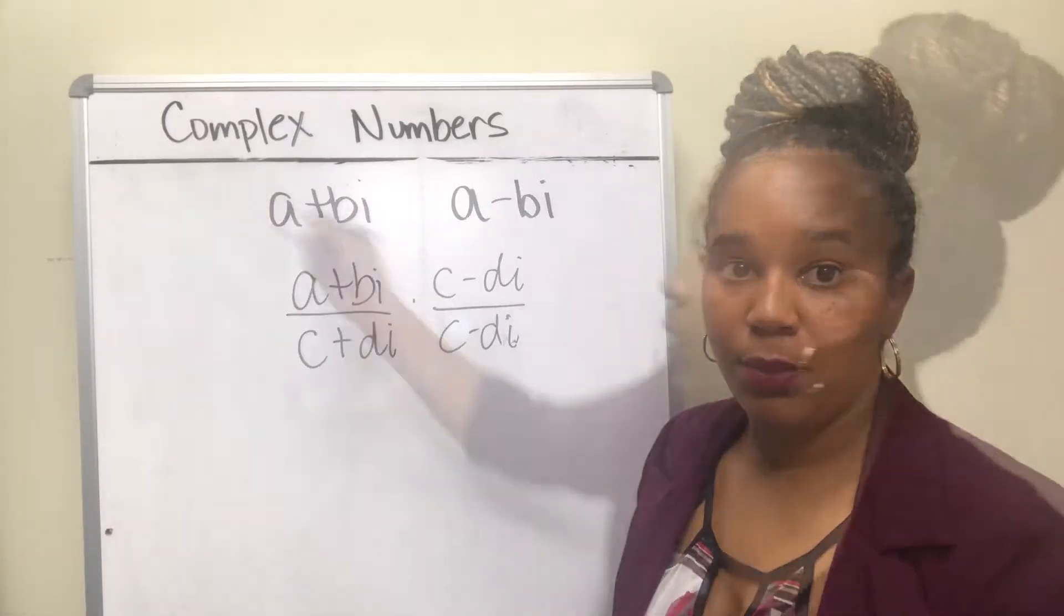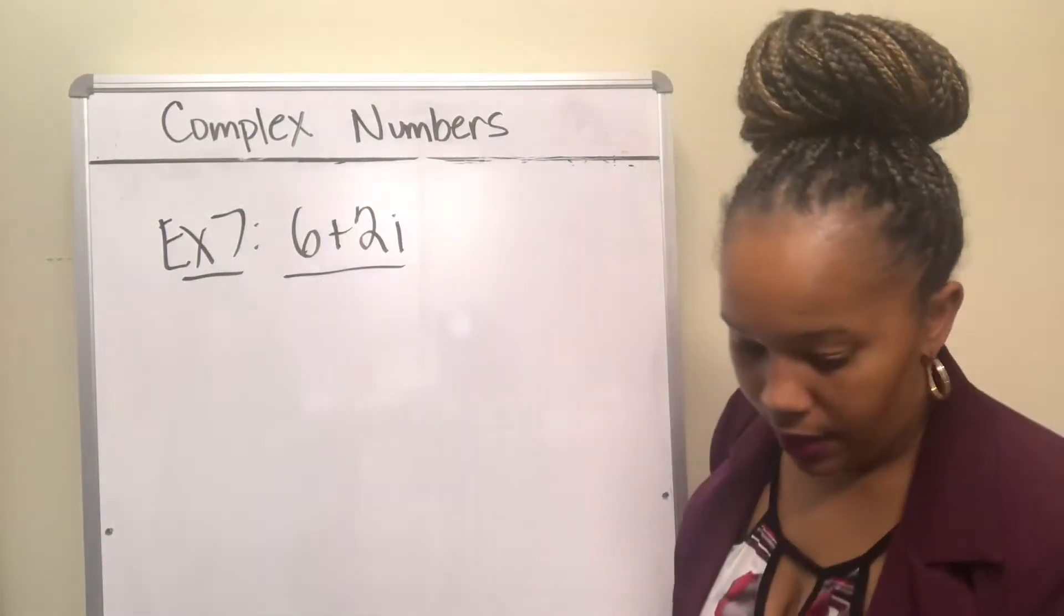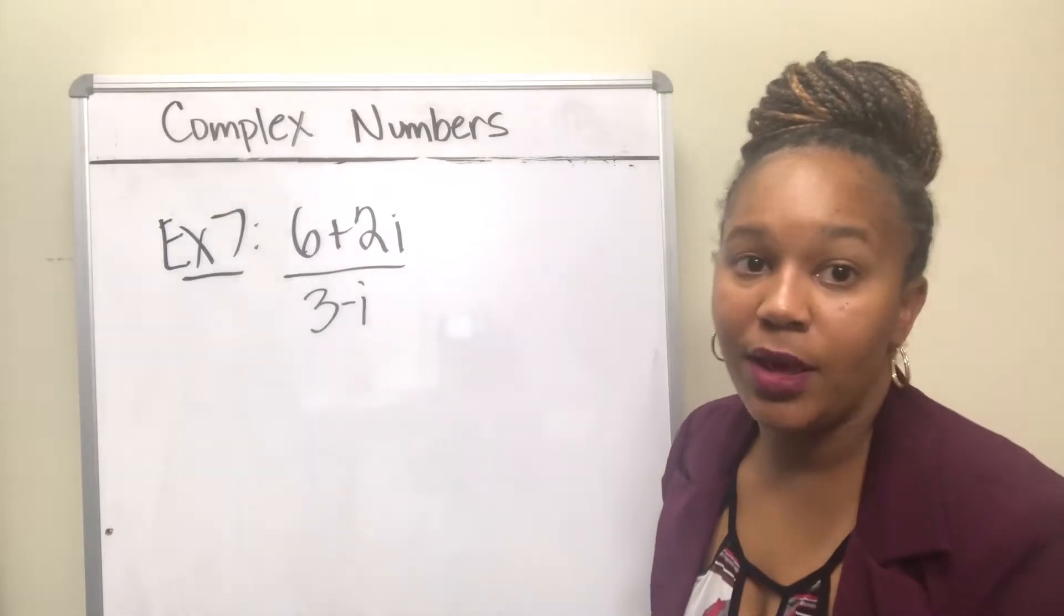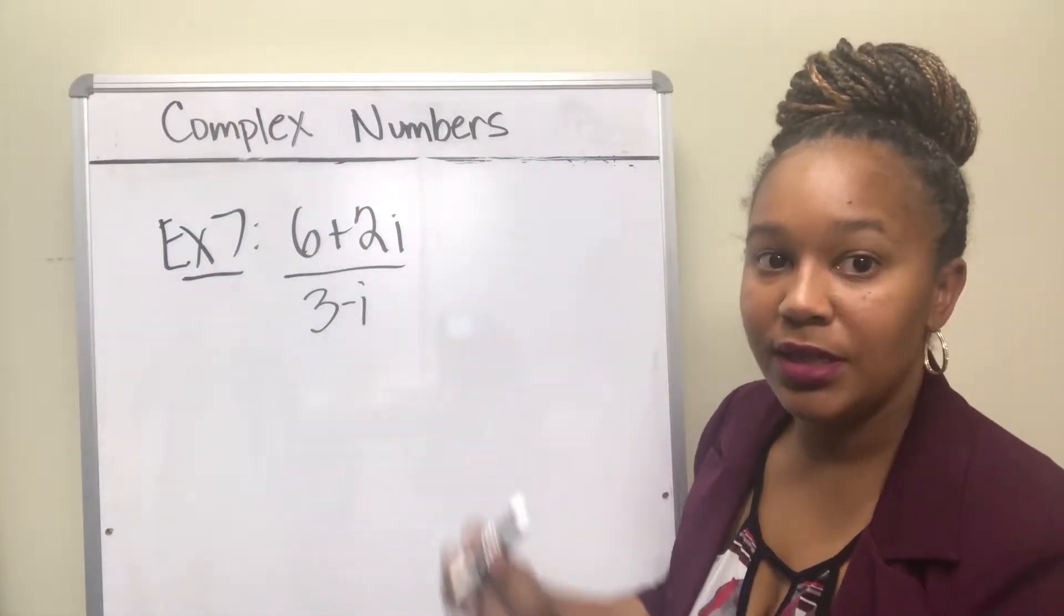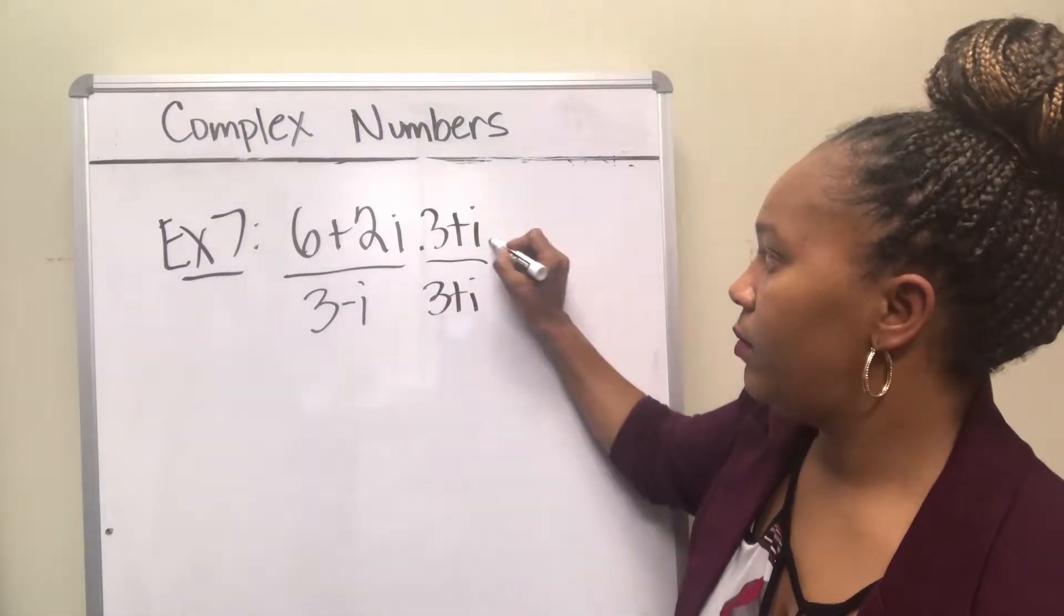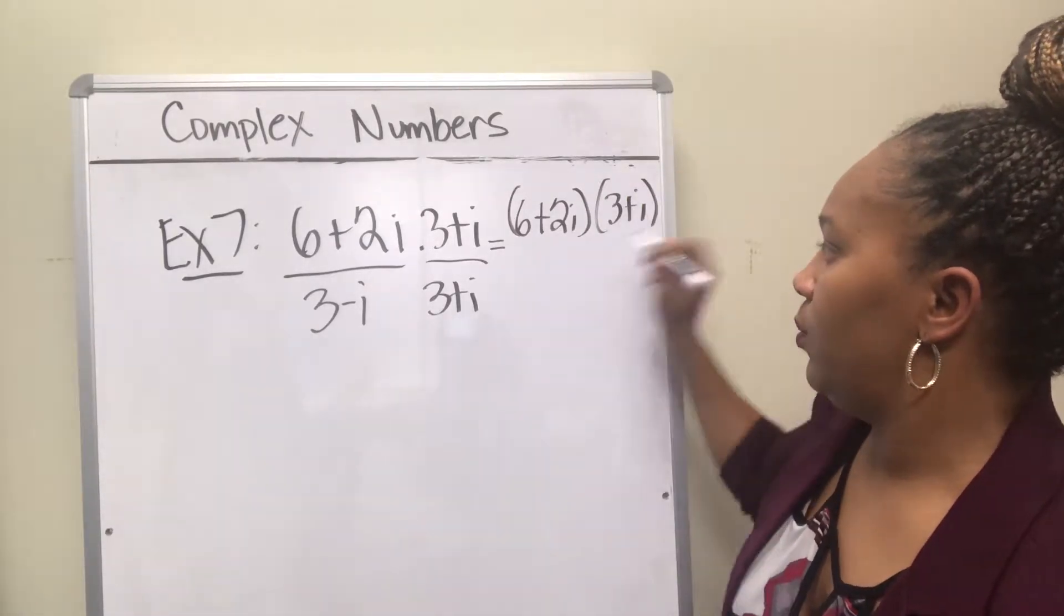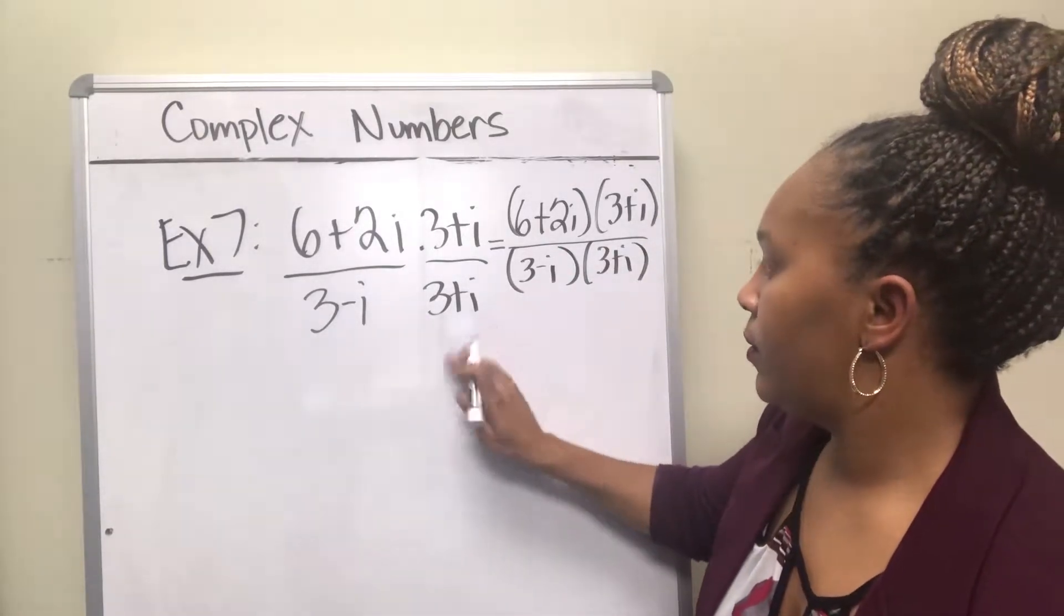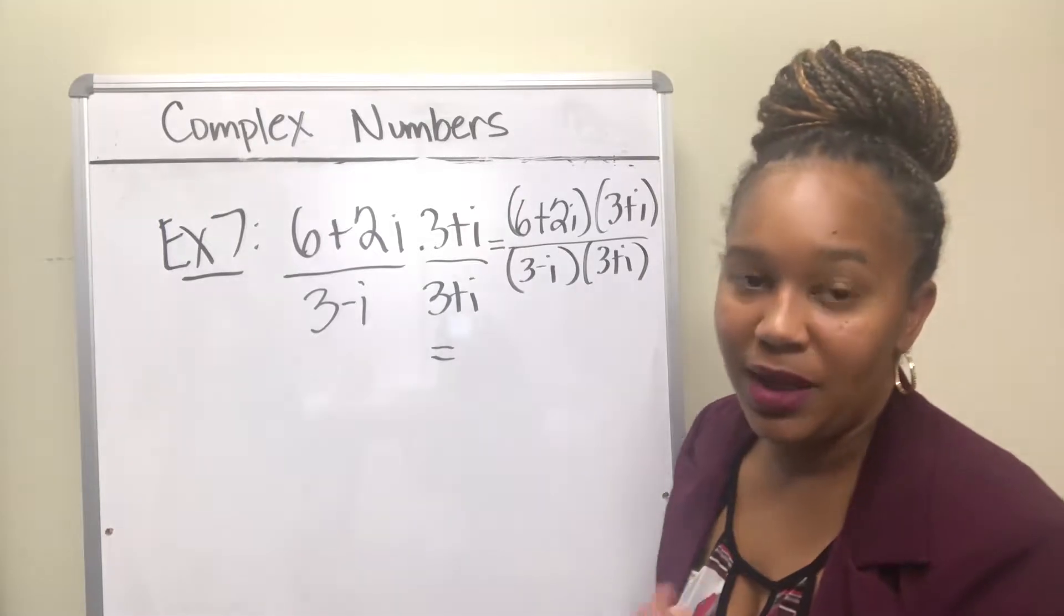So let's look at an example. So in example seven, we are going to divide 6 plus 2i by 3 minus i. So in order to divide, we have to multiply by the complex conjugate of the denominator. The denominator is 3 minus i, so the conjugate of that would be 3 plus i. So we want to multiply the top and the bottom by 3 plus i. And I'm going to rewrite it as 6 plus 2i in parentheses times 3 plus i in parentheses, and same in the denominator. So you have to multiply in order to divide.